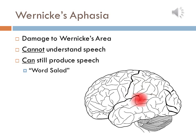Wernicke's aphasia occurs in people who experience lesions on Wernicke's area, located in the posterior portion of the left temporal lobe. These people are able to speak, but produce nonsensical sentences, often referred to as a word salad.